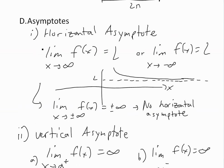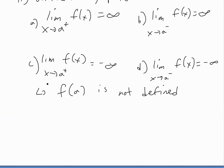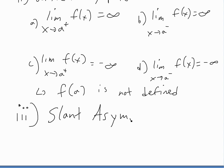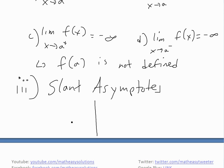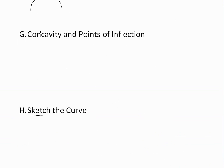Going back to part D on asymptotes, I forgot to mention there is one other kind — slant asymptotes. I haven't discussed this in my math easy videos yet, but basically it's when you have an asymptote that is slanted, and the function follows this slanted line as it goes to infinity. We'll explain this in another video as it's a bit more complex.